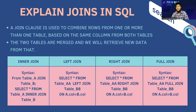Explain JOINs in SQL — this is one of the most asked questions in interviews. A JOIN is used to combine rows from one or more tables based on the same column from both tables. There are four types of JOIN: INNER JOIN, LEFT JOIN, RIGHT JOIN, and FULL JOIN.